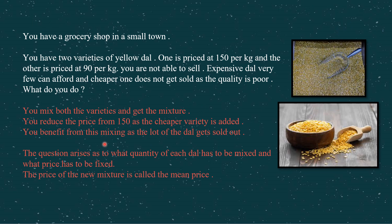Suppose you own a grocery shop in a very small town. You have two varieties of yellow dal — one is of better quality and the other is a little less on quality. The higher quality dal is priced at 150 per kg and the lower quality one is at 90 per kg. The problem is that you are not able to sell them properly. The expensive dal at 150 is too costly for people, and you cannot sell the 90 per kg dal either because, being cheaper, it is a little less on quality. So you are caught in a fix.